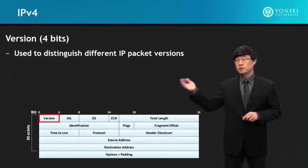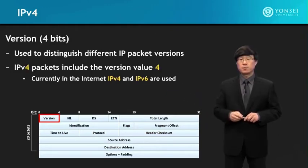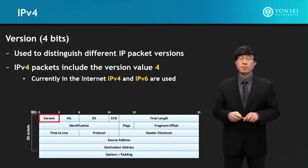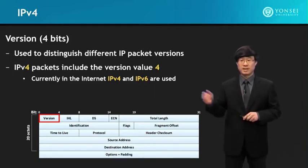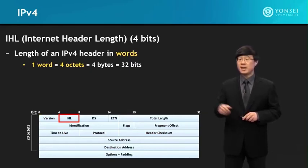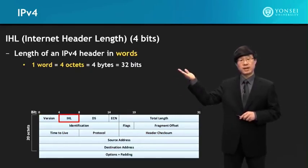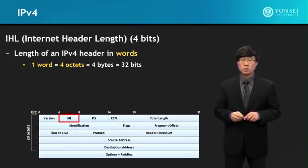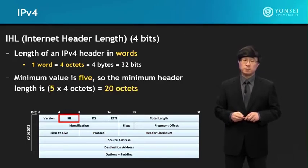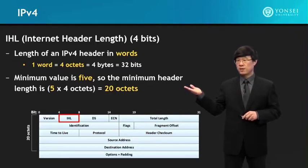The IPv4 packet header contains all required functionalities to deliver an IPv4 packet to its destination. The version field tells what version it is — for IPv4 it contains binary 4, for IPv6 it contains binary 6. The IHL (Internet Header Length) is 4 bits and specifies the length of the IPv4 header in words, where one word is 4 octets (32 bits). The minimum value is 5, so the header minimum length is 20 octets.